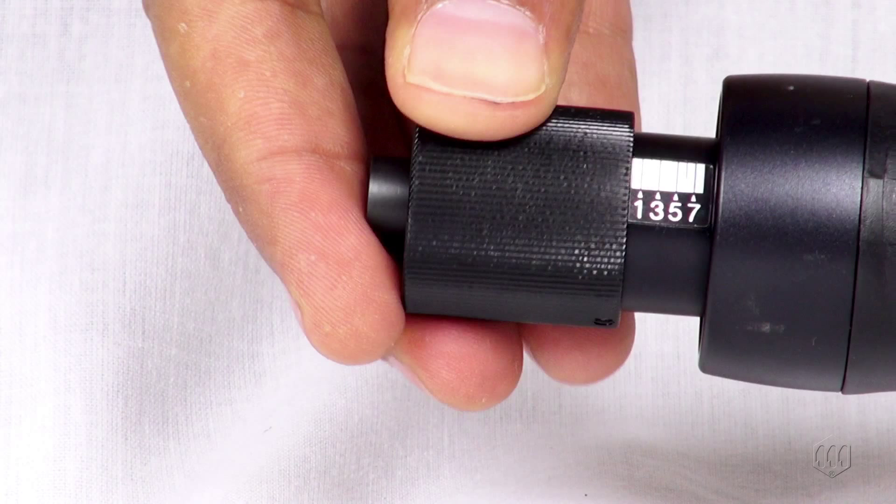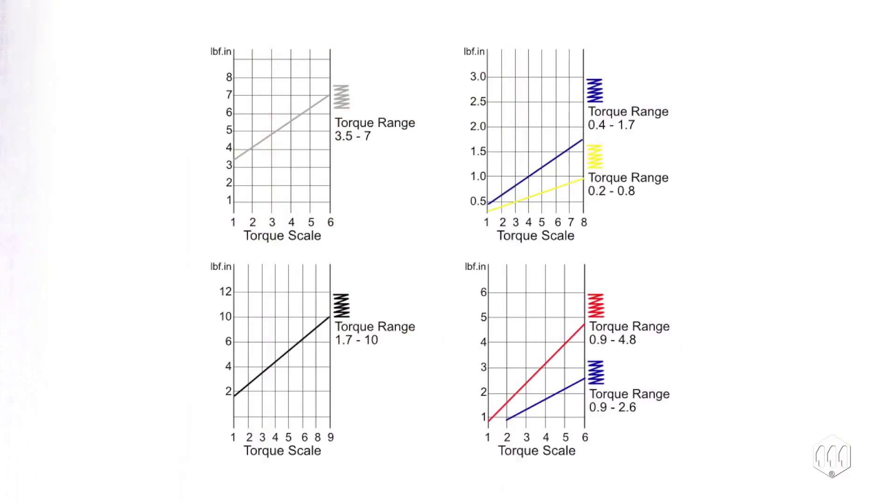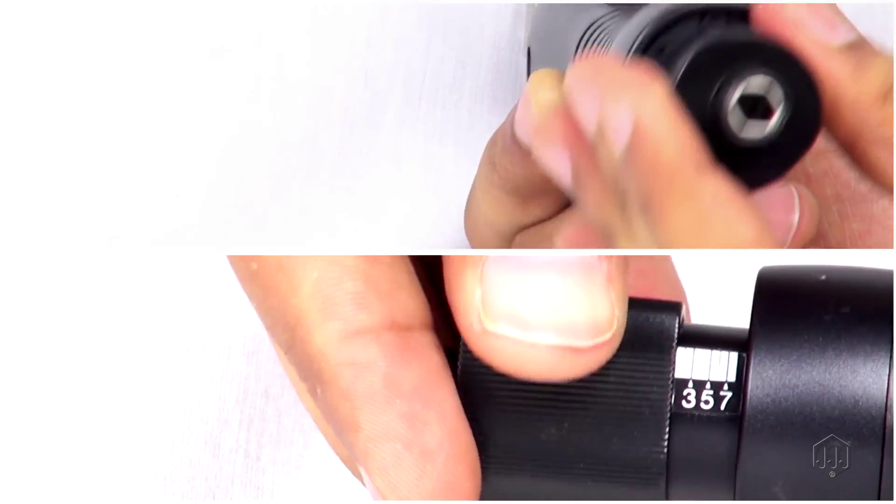The drivers have a scale on the torque adjustment nut showing reference numbers that determine the approximate torque setting. Refer to the torque reference charts located in the operations manual to set the screwdriver.